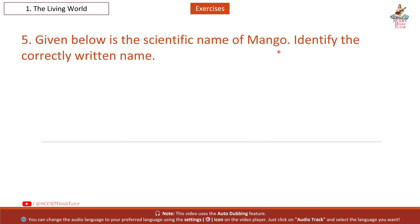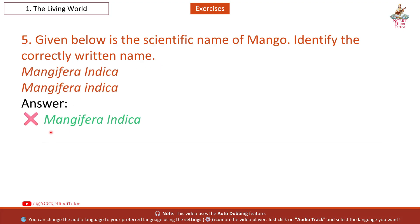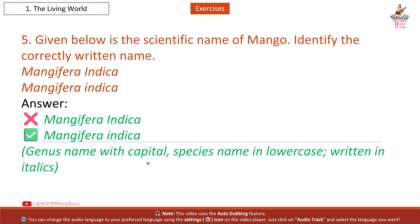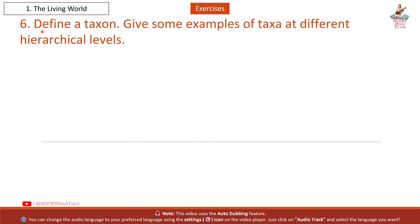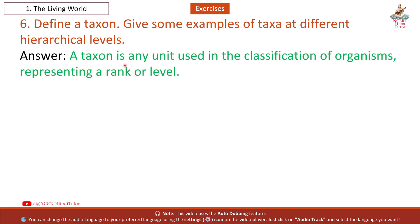Question 5: Given below is the scientific name of mango — identify the correctly written name. Answer: This one is wrong. The correct one is this — genus name written with a capital letter, species name in lowercase, and the full name written in italics.